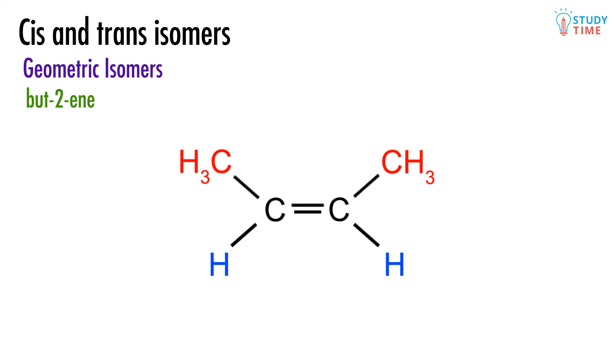When each of the pairs of things, the two CH3s and the two Hs, are on the same side, for example both the CH3s are on the top, we say that we've got the cis isomer. You can remember that because cis and same side all have an S sound.